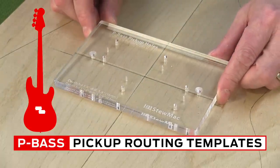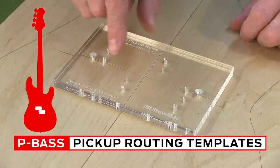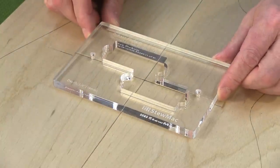For P-bass pickups we have a two-template system. The first one is a drill jig for drilling out your corner holes and mounting screws, and the second template is for routing out the cavity.